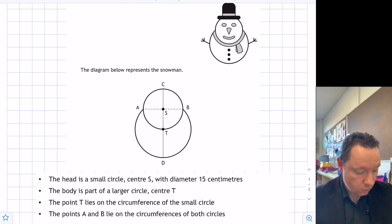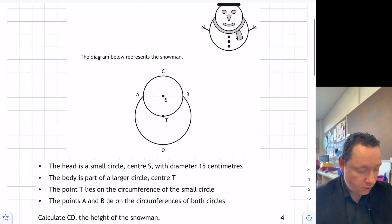The body is a larger circle with centre T. It says T lies in the circumference of the small circle and A and B lie in the circumferences of both circles. And the question is, calculate CD the height of the snowman.